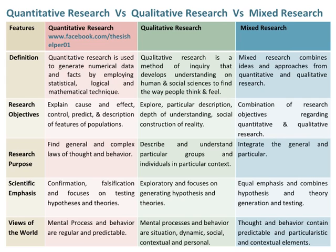Views of the world in quantitative research hold that mental processes and behavior are regular and predictable. In qualitative research, mental processes and behavior are seen as situation-dependent, dynamic, social, contextual, and personal. In mixed research, thought and behavior are seen as containing both predictable and particularistic, contextual elements.